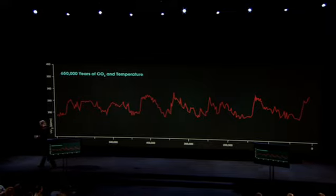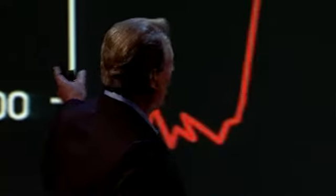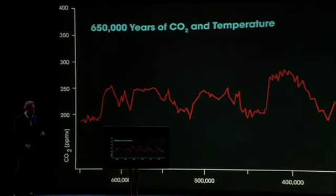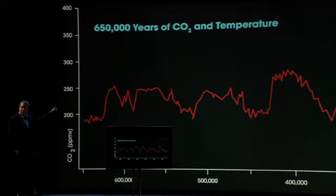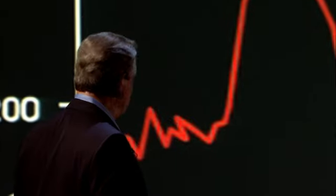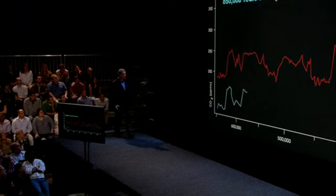Now, an important point: in all of this time, 650,000 years, the CO2 level has never gone above 300 parts per million. Now, as I said, they can also measure temperature. Here's what the temperature has been on our Earth.